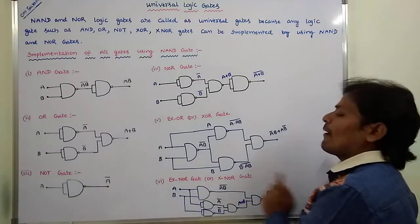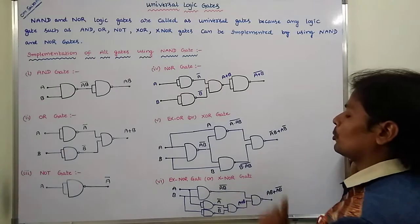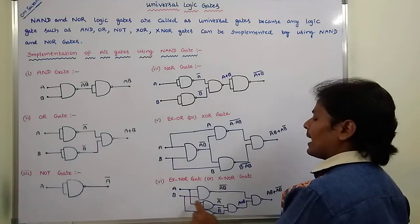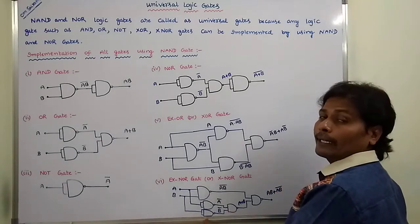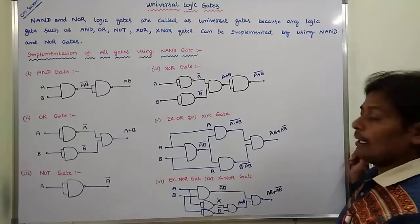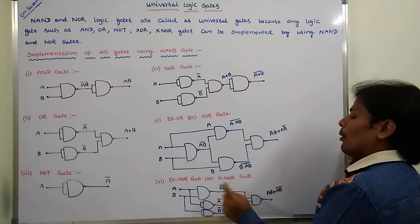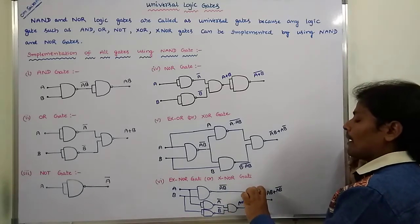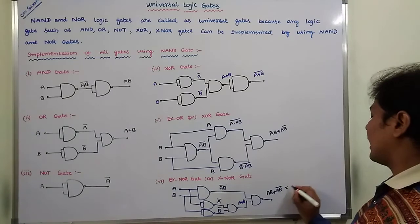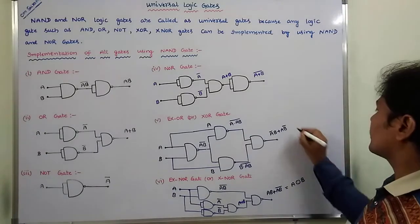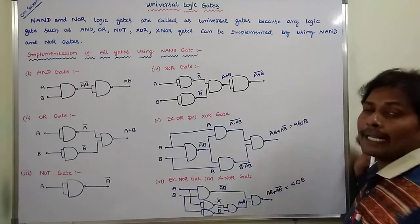Next, exclusive NOR gate or XNOR gate. A and B are applied as two inputs to the NAND gate, then we are getting AB whole bar. Only input A is applied to the NAND gate, then we are getting A bar output. Only B is applied as input for the NAND gate, then we are getting B bar. This A bar and B bar can be applied to the NAND gate, then we are getting A plus B. These two inputs, AB whole bar and A plus B, are applied to another NAND gate, so then we are getting the output AB plus AB whole bar, that is equal to A exclusive NOR B. So A XNOR B is the output of exclusive NOR gate.